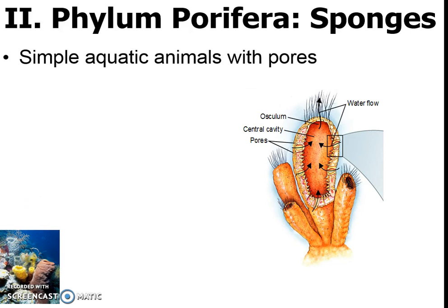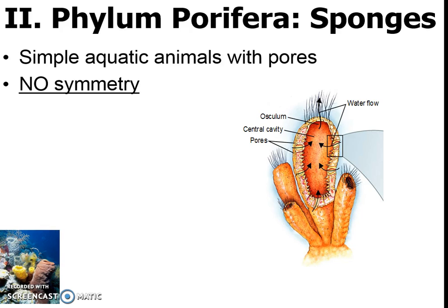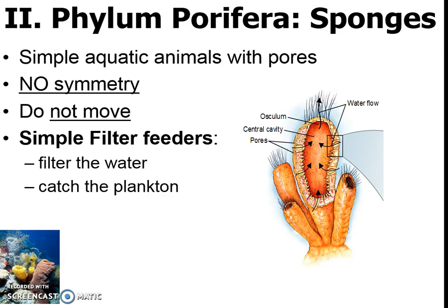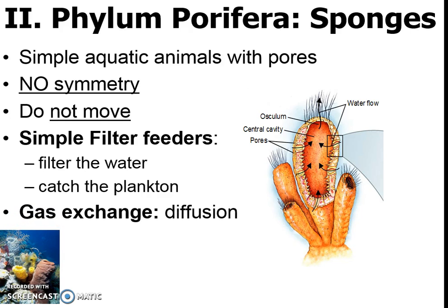Sponges are really simple critters. No, they do not look like SpongeBob, but they do have pores and they're not really symmetrical in any way because they're so simple. They don't move, and they don't have much of a digestive system at all. The main system they have is their feeding system — they are heterotrophs, they have only one opening, a mouth, and they catch plankton through that. For gas exchange, since they do cellular respiration, they simply diffuse oxygen dissolved from the water and release CO2. Very, very simple — no lungs or anything like that.